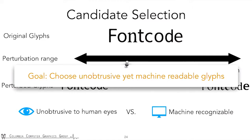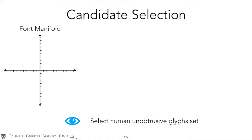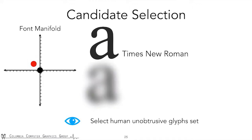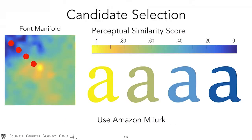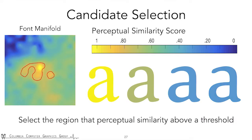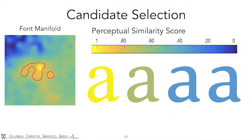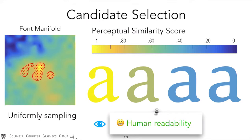Let me briefly go through our selection process. First, we need a set of glyphs that are perceptually similar. On the font manifold, suppose the standard font Times New Roman is at the origin. As we sample a point further and further from the origin, we get more and more different glyphs. But the manifold distance doesn't necessarily reflect the difference in human perception. Thus, we learn the perceptual difference through a crowdsourcing user study on Amazon Mechanical Turk. This gives us a similarity distribution on the font manifold — the lighter the color, the more similar the glyph is to the original. We then select a region where the perceptual similarity score is above a threshold and uniformly sample points in that region, ensuring the sampled glyphs are perceptually similar and unobtrusive to our eyes.